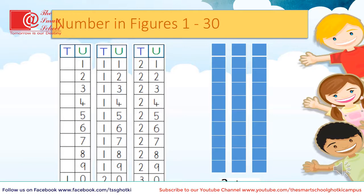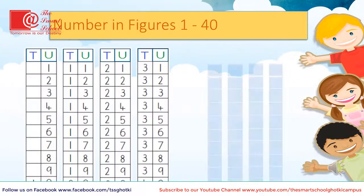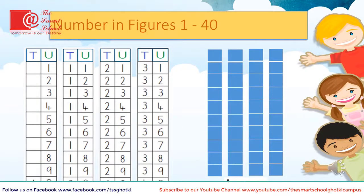How many sets of numbers are there? Correct — three sets of numbers. And how many tens are there? Yes, of course, three tens. Here we have numbers: 1 till 10, 11 till 20, 21 till 30, and 31 till 40. Four sets of numbers and four tens.